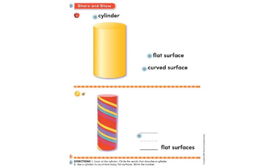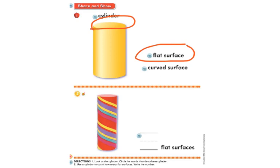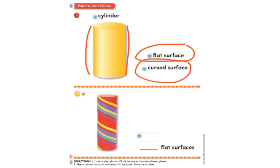Number one: looking at the yellow cylinder, we want to talk about words that describe a cylinder. Does a cylinder have flat surfaces? Yes, cylinders do have flat surfaces — they have two of them. Remember, one at the top and one at the bottom. Now the next one: does a cylinder have a curved surface? Yes, it does. A cylinder has a curved surface on the sides. If you were to take a cylinder and put it on its side, you could roll it because it is curved.